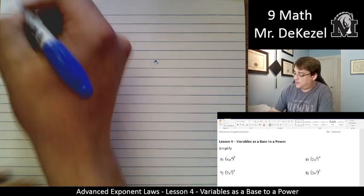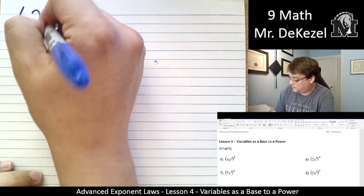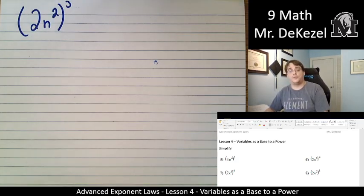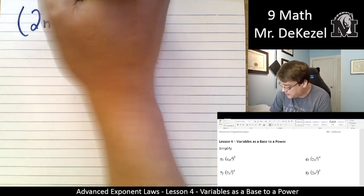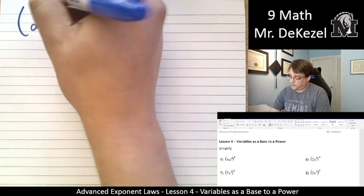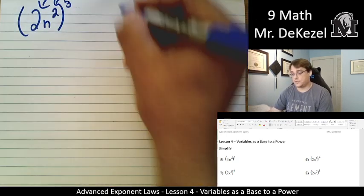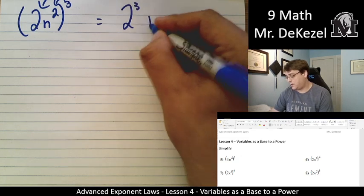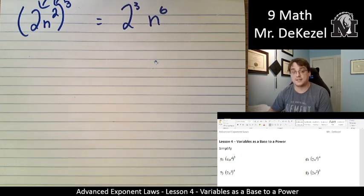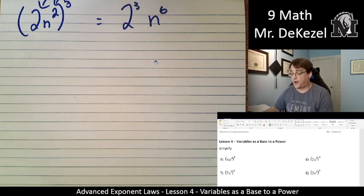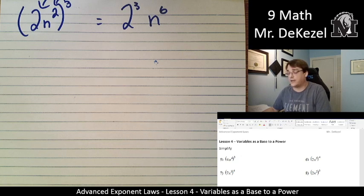Let's do another one: two n to the power of two, cubed. That is a three, you know how I do. So that three applies to both of these, so that is two to the power of three, n to the power of six. You can go ahead and pause here and maybe try the next ones and then see if you got the right answer, but I'll continue right away.